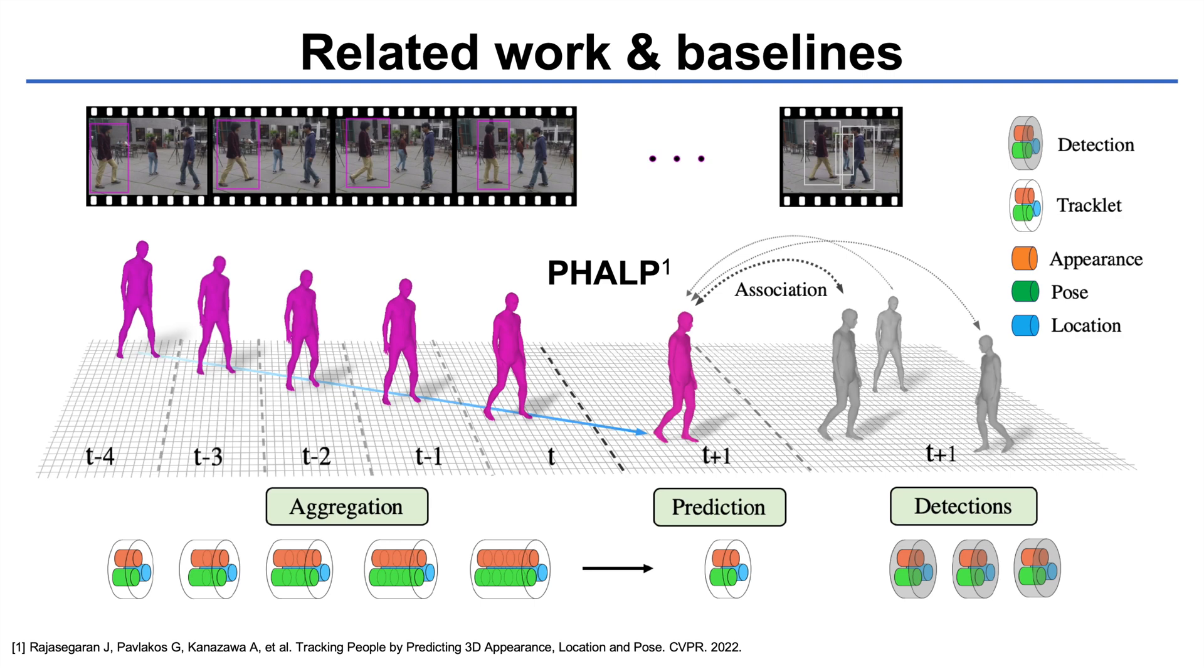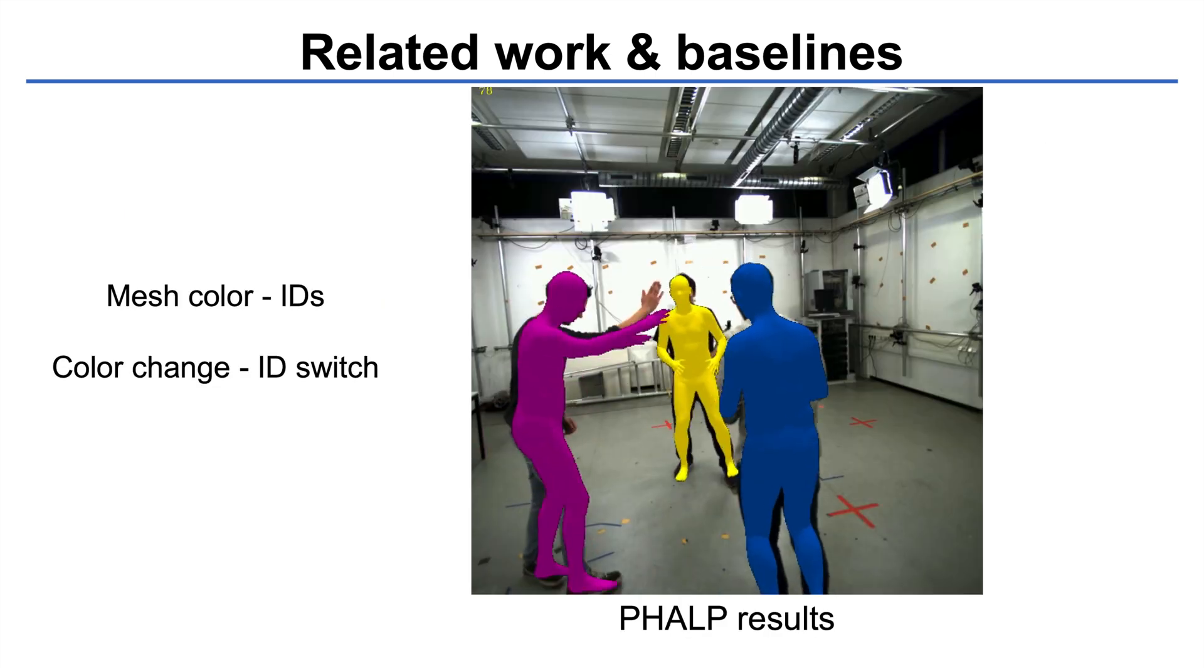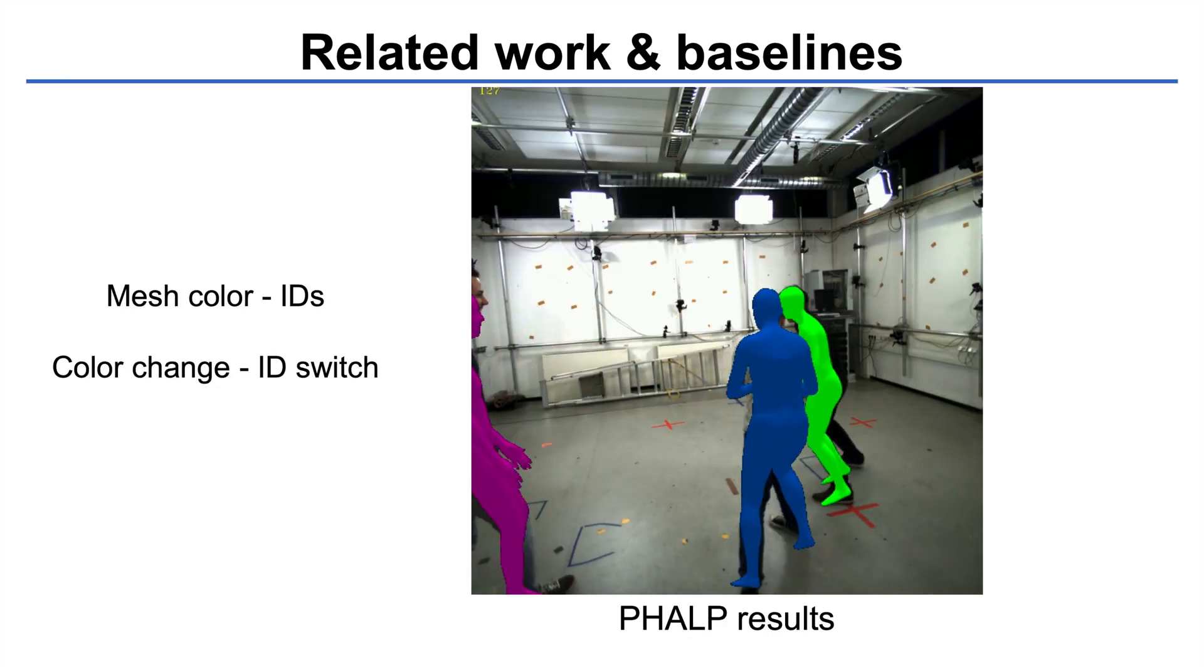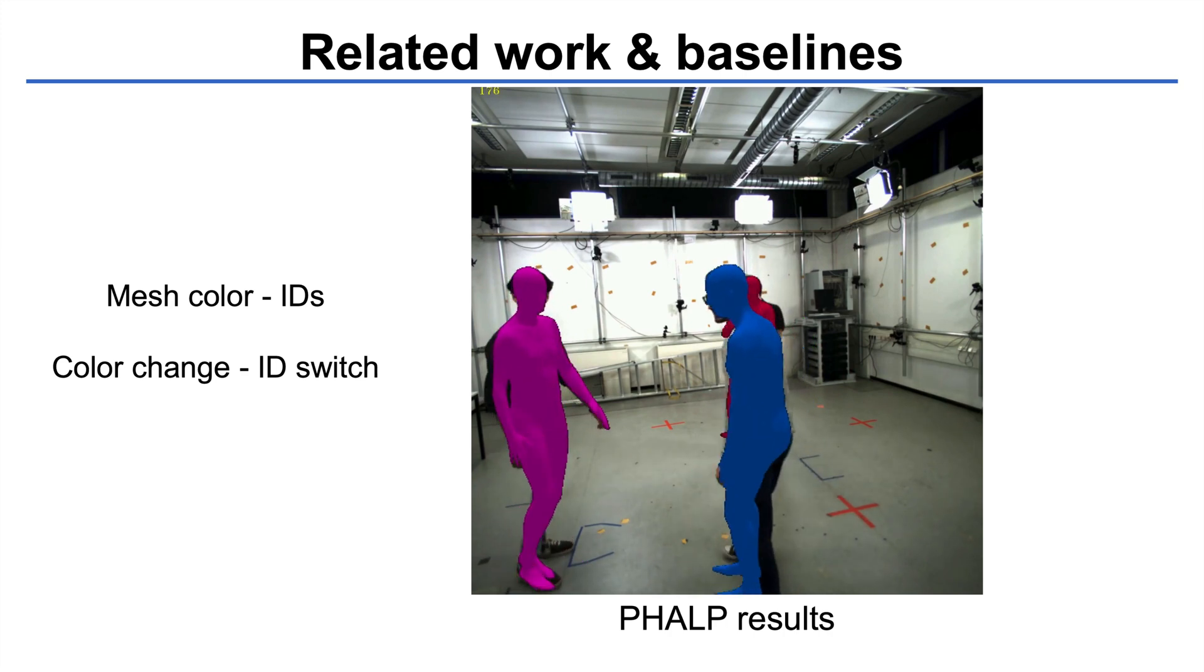To track 3D people over time, PAP assembles separately extracted 3D cues for tracking, including 3D appearance, 3D poses, and 3D locations. However, without end-to-end learning of temporal cues, PAP suffers from failures under severe occlusions.